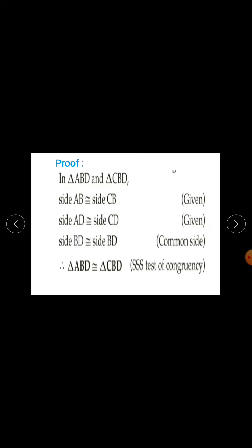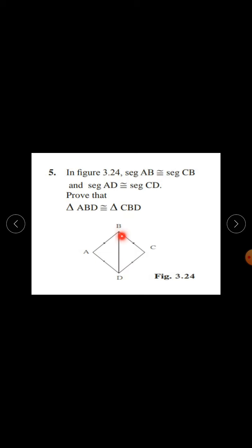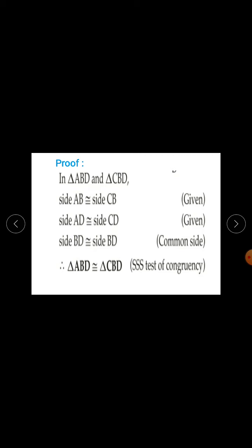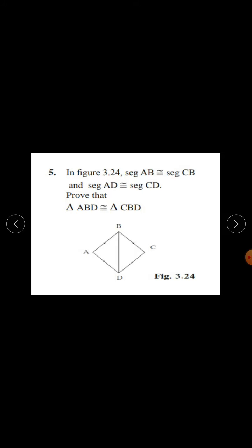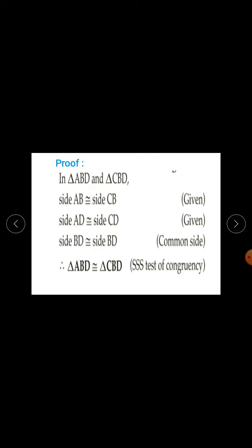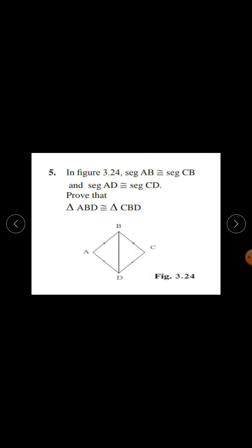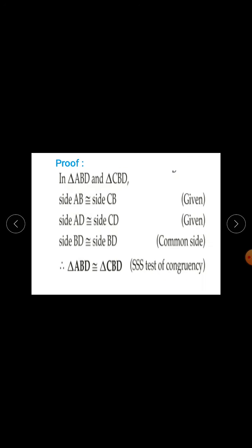In triangle ABD and triangle CBD: Side AB is congruent to side CB — reason is given. Side AD is congruent to side CD — reason is also given.